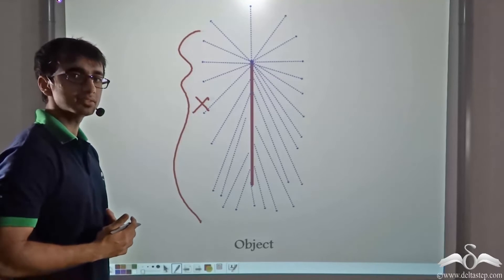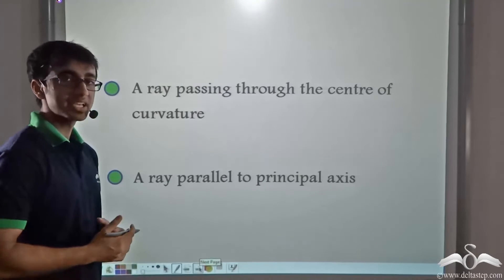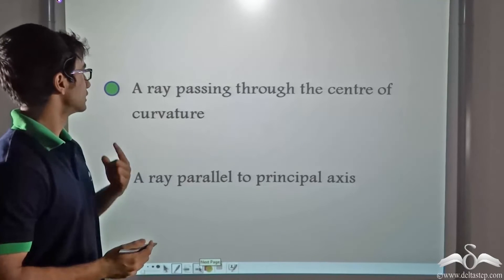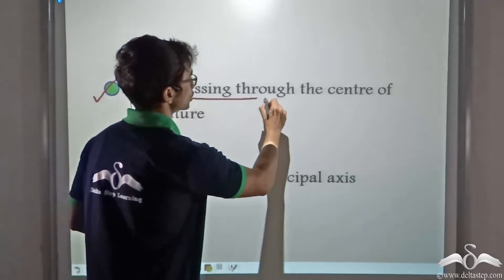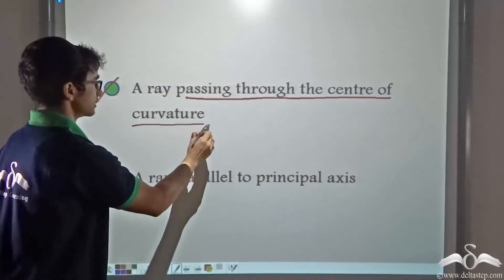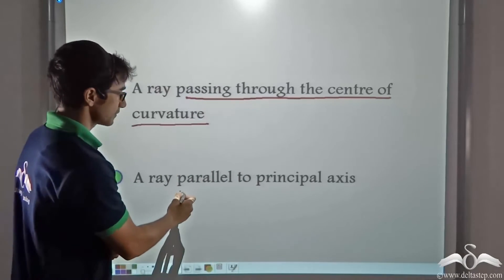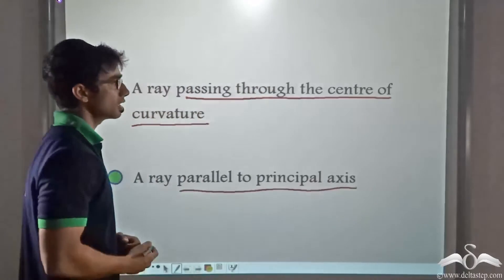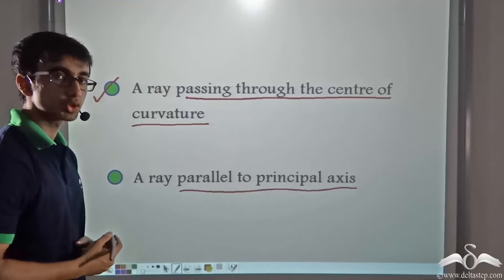So what rays do we consider? We consider only two rays. The first ray we consider is a ray passing through the centre of curvature of the mirror. And the second ray we consider is a ray parallel to the principal axis. Why do we consider these two rays? We shall soon find out.